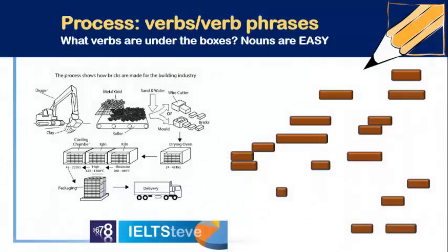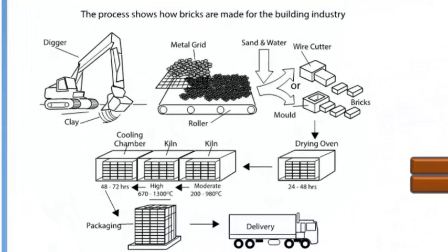In a process, the language that's really important is what's not shown. So the verbs are important. Quite often in a process, they don't show you the verbs. We see here on this picture lots of nouns — they're talking about all the things that are in the process, but they're not mentioning verbs. So that means you are going to have to consider what verb to use.